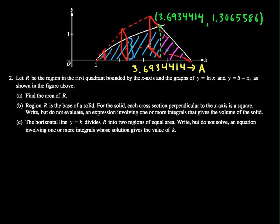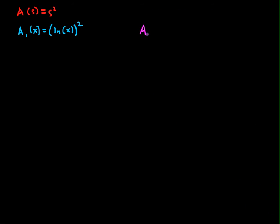I also know in this purple region over here, this height is measured by 5 minus x. So I know for that second region, the area of each square in terms of the variable x is equal to (5 minus x) squared.